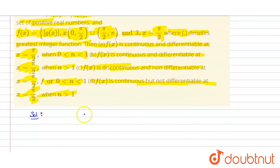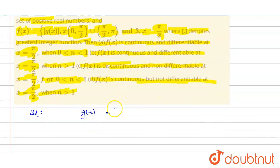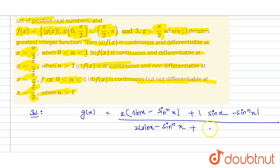Coming to the solution: we have g(x) equals [2h(x) + |h(x)|] divided by [2h(x) - |h(x)|]. Putting the value of h(x) here, we get g(x) as [2(sin x - sin nx) + |sin x - sin nx|] divided by [2(sin x - sin nx) - |sin x - sin nx|].